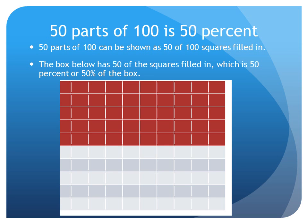Look at the box and count the squares on the top, one through ten, and the squares on one side, one through ten, and we see that there are 100 total squares. So if we look at a large box with 100 small squares in it, in order to show 50 parts of 100, or 50%, we need to fill in 50 squares, which is what you see on the slide. 50 parts of 100 can be shown as 50 of 100 squares filled in.